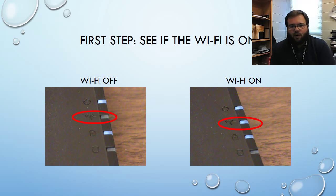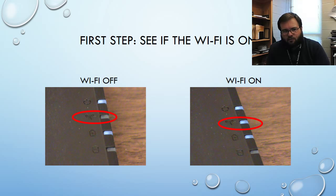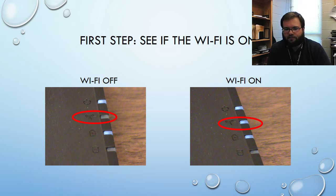The first step is to check whether the Wi-Fi is on. On the right-hand side of the computer there are four indicator lights. The second light down has a little radio antenna symbol. If that light is not lit up, the Wi-Fi is off, which is an easy fix. If the Wi-Fi light is on, we have something slightly different to do.